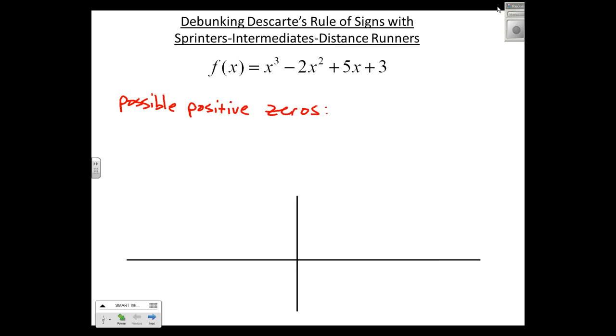So the number of zeros that I have to the right of the y-axis is equal to the number of sign changes in the polynomial. So we start positive, go negative—there's one—turn back to positive, two sign changes.